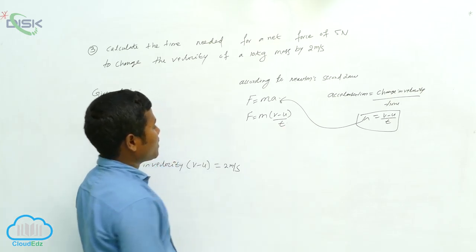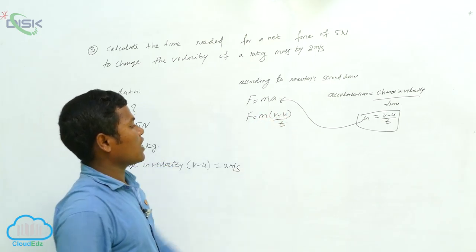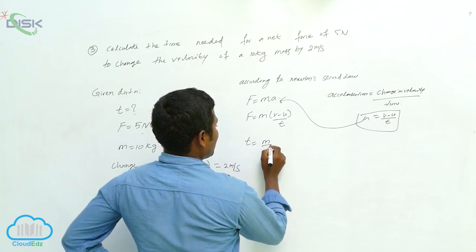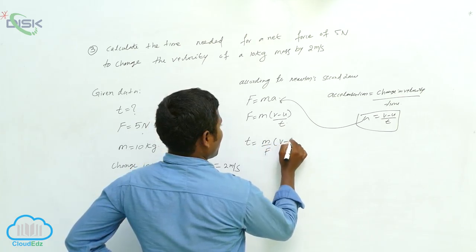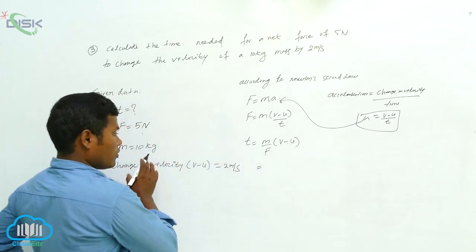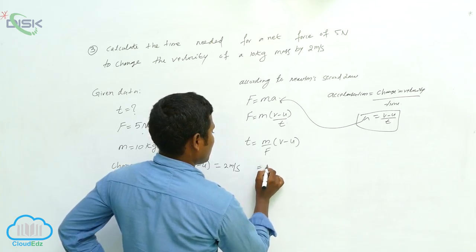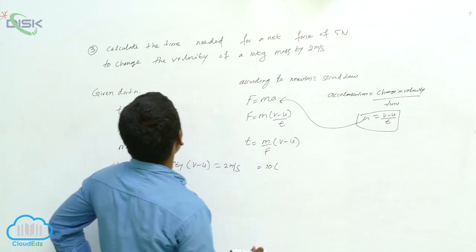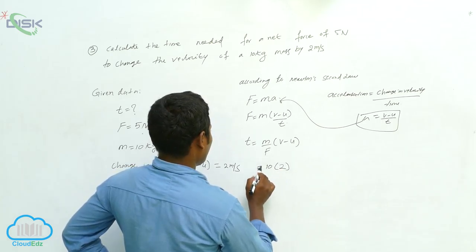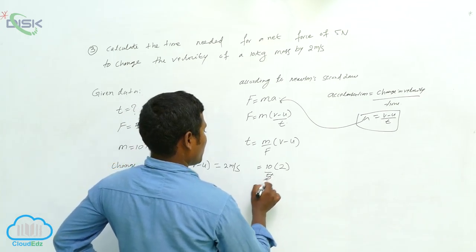So now rearranging, t is equal to m times (v minus u) divided by F. From the problem, m is equal to 10, change in velocity (v minus u) is 2, and F is 5.